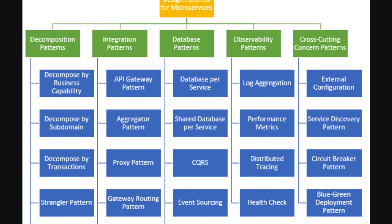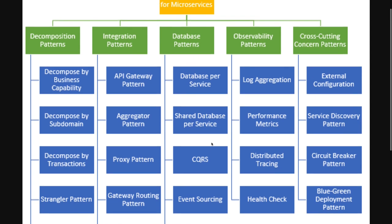The Observability pattern covers log aggregation, performance metrics, distributed tracing, and health checks of different microservice APIs. Cross-cutting concerns are about externalizing configurations — whatever configurations we have for different environments, we can externalize them so applications can be deployed independently by accessing those configurations, avoiding code modifications for different environments like dev, QA, and staging.